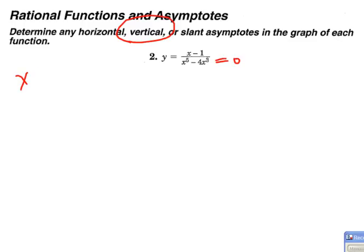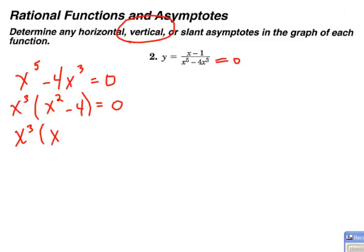So I'm going to take x to the 5th minus 4x cubed and set that equal to 0. And I can factor out an x cubed, and that'll leave me with an x squared minus 4 in parentheses. And then x squared minus 4, that's a difference of squares. So that can also be factored down to an x plus 2 times an x minus 2.